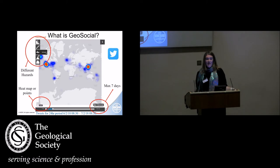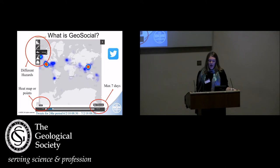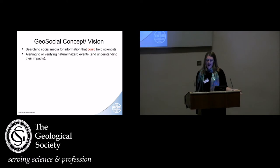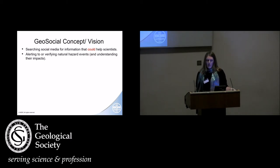It looks back for the past seven days, and we have heat maps to show you where people are talking about these different hazards. The concept is: can this kind of big data, this information, help scientists? Can it help our natural hazard scientists learn something new, understand natural hazard events more? Can it help understand their impacts? We're moving towards more impact-based modelling in the natural hazard sciences, so in order to understand impacts, we want more information on impacts.